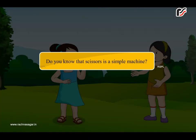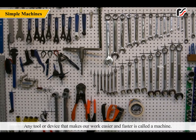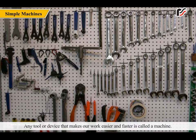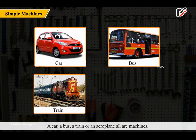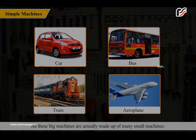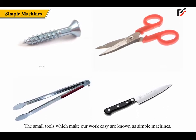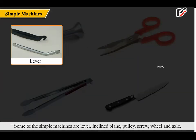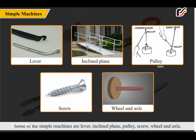Do you know that scissors is a simple machine? Yes, any tool or device that makes our work easier and faster is called a machine. A car, a bus, a train or an aeroplane — all are machines. All these big machines are actually made up of many small machines. The small tools which make our work easy are known as simple machines. Some of the simple machines are lever, inclined plane, pulley, screw, and wheel and axle.